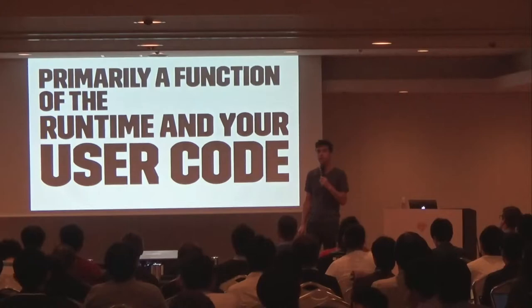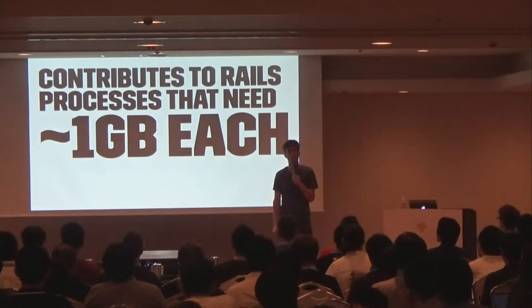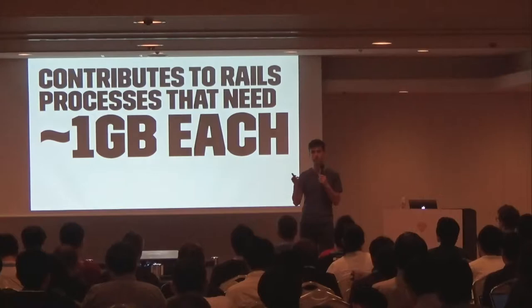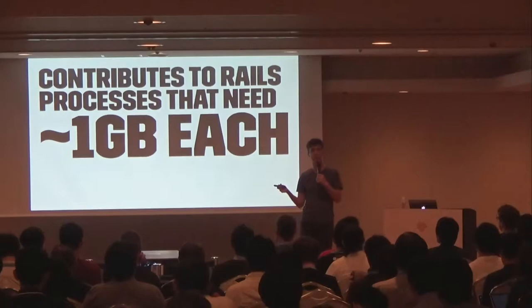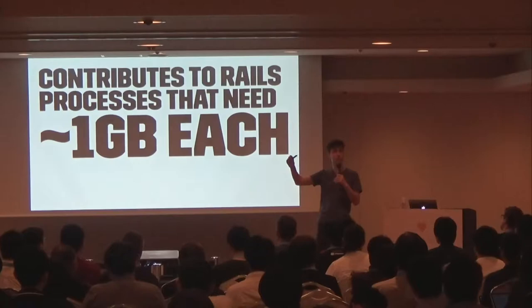This behavior is primarily a function of the way the Ruby runtime works and also the way your memory allocator works. It can contribute to Rails processes or background job processes that use gigabytes of memory each. This behavior of memory being used a lot at one time and then not being returned to the operating system can create really big problems, because basically your long-term memory usage of a Ruby process is the maximum memory you ever need at one time.